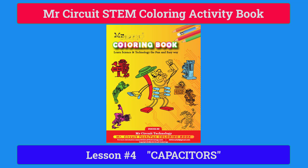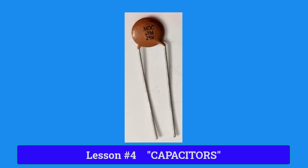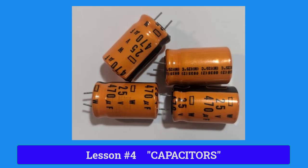This is lesson four of the Mr. Circuit STEM Coloring Activity Book. This lesson is about capacitors. A capacitor is used extensively in electric circuits as a temporary storage of electrons. Generally, the larger the capacitor, the more electrons it can store.